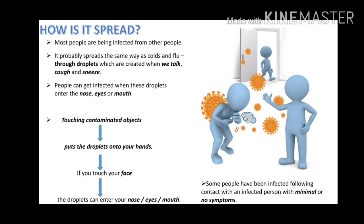How it is spread: Most people are being infected from other people. It probably spreads the same way as cold and flu, through droplets which are created when we talk, cough, and sneeze. People can get infected when these droplets enter the nose, eyes, or mouth. Touching contaminated objects puts the droplets on your hands, and when hands touch your face, droplets can enter your nose, eyes, and mouth.